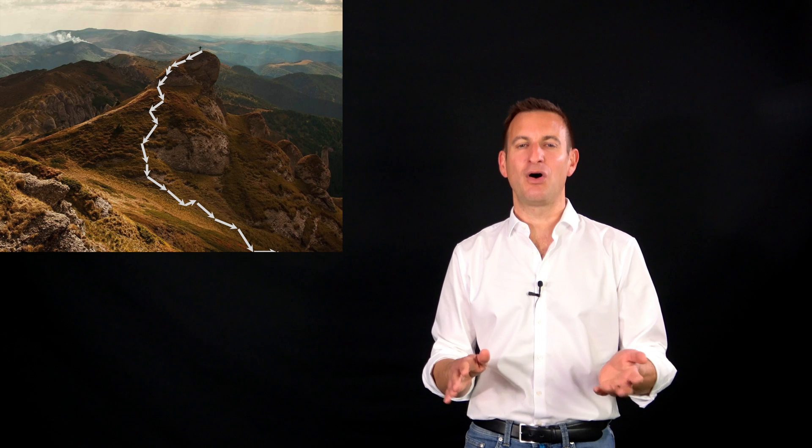In our mountain analogy, this is basically just a drunk person walking down into the next valley. Taking a few steps which are a little bit off, but overall will probably go into the right direction. And that's basically what gradient descent and stochastic gradient descent are about.